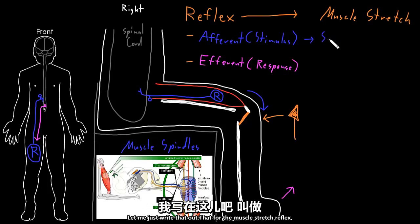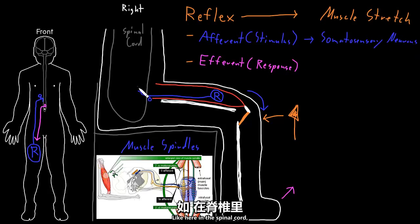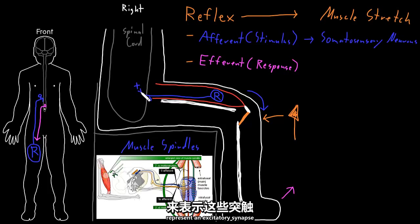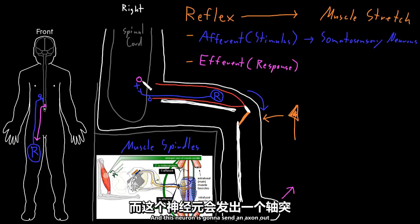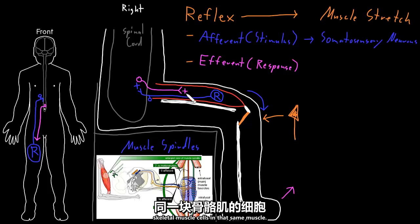For the muscle stretch reflex, the afferent part consists of somatosensory neurons. Inside the central nervous system — here in the spinal cord — these somatosensory neurons carrying muscle stretch information form an excitatory synapse with another neuron whose soma is in the central nervous system. This neuron sends an axon out through peripheral nerves back to the same muscle that was stretched, and it synapses on and excites skeletal muscle cells in that muscle, causing the muscle to contract and producing the response.